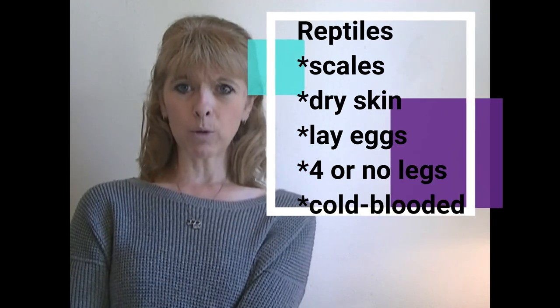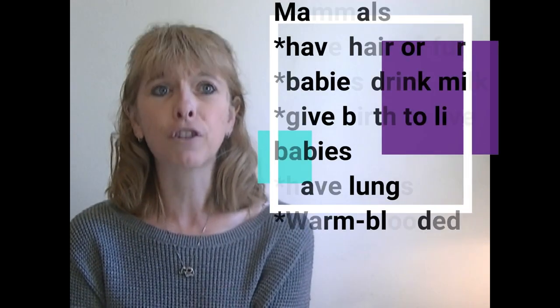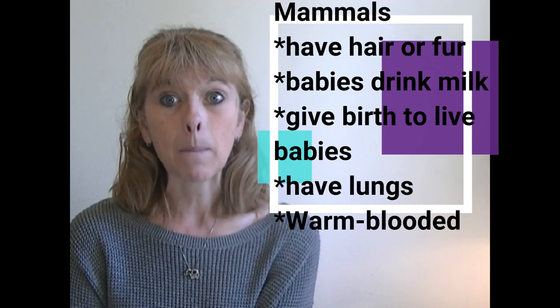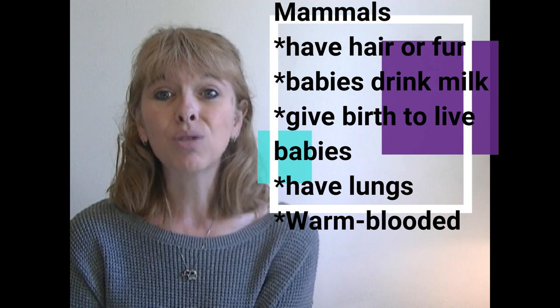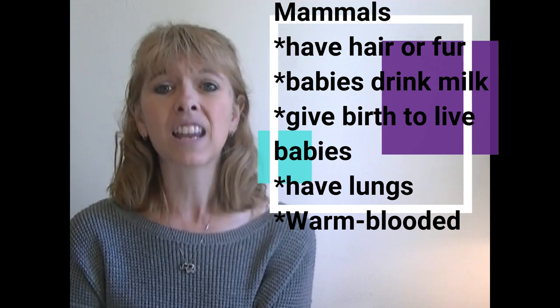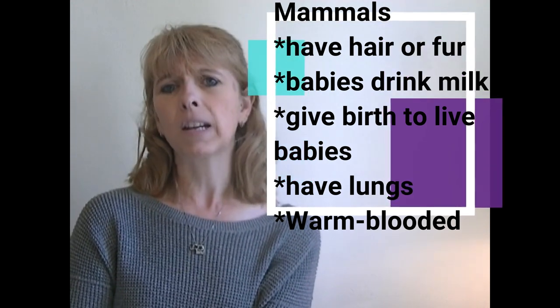All right. The next type of animal that we're going to talk about today. Mammals. Mammals have either hair or fur. Their mothers feed the babies milk. They give birth to live babies. They have lungs. And they are warm blooded.